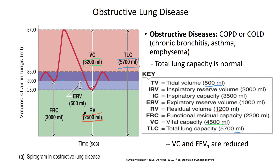Why is the residual volume increasing? Obstructive lung diseases generally make it harder for the person to breathe out. When it's harder to breathe out, they have a larger amount of air in their lungs after they're done exhaling, even when exhaling with force — which is what the residual volume measures. The ERV, the amount of air you can exhale past a normal exhalation, decreases from 1,000 to 500. That accounts for 500 of the 1,300 difference.